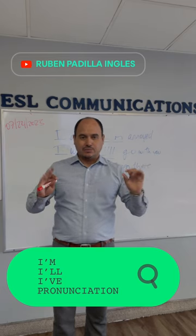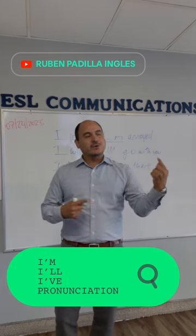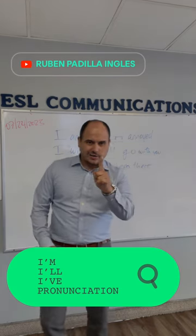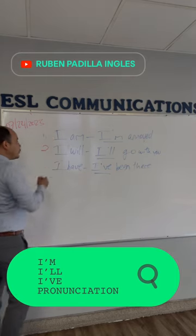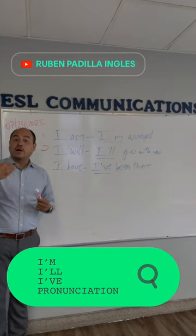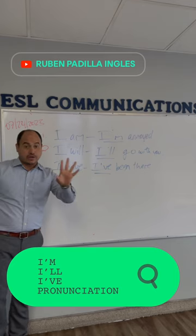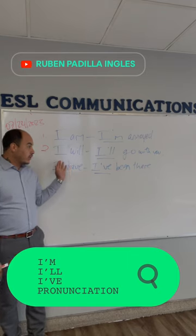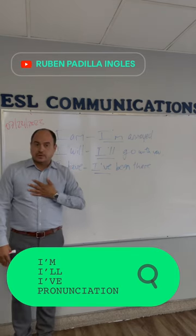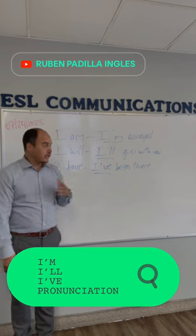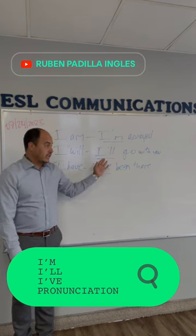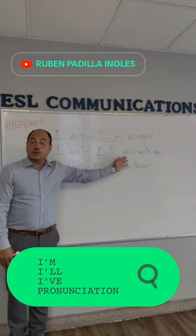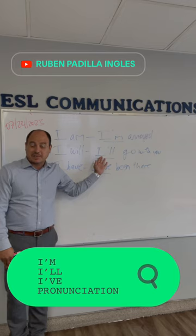I'm ready. Right, good. So no le dices 'I am ready' — no. Abbreviated: I'm ready. Good. Number two: en el futuro, 'I will.' Hay tres diferentes formas de expresar futuro. 'I will' — como le digo a alguien: 'yo iré contigo.' Now abbreviated: I'll go with you.